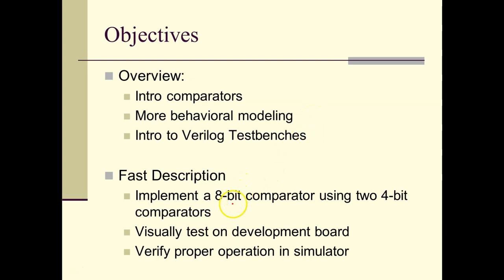What we're going to do is take two 4-bit comparators and make that into an 8-bit comparator. It's not a big deal to make an 8-bit comparator, but using two 4-bit comparators gives us extra practice. We're going to test this visually on the board and also test it in the simulator, which means we're going to generate a test bench for it.